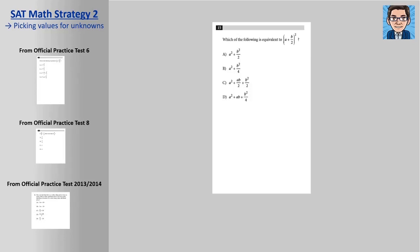So you want to pick numbers that are easy to work with. Right here, b is being divided by two, so I'm going to pick an even number for b because that's going to make it a lot easier. So for b, I'm going to pick four. And for a, let's pick three.